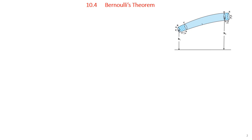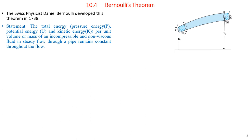Bernoulli's theorem was developed by Swiss physicist Daniel Bernoulli in the year 1738. It states that the total energy — that is, the sum of pressure energy P, potential energy U, and kinetic energy K — per unit volume or per unit mass of an incompressible and non-viscous fluid in a steady flow through a pipe remains constant throughout the flow.